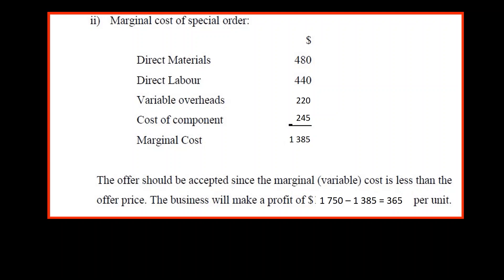The marginal cost of the special order would be the variable cost of producing it plus the cost of the component, giving a total marginal cost of 1,385. The offer should be accepted since the marginal variable cost is less than the offer price. The business will make a profit of 1,750 minus 1,385 equals $365 per unit.